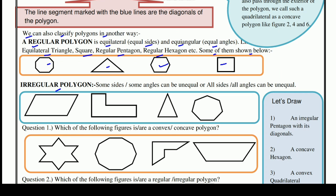Irregular polygon: some sides and some angles can be unequal, or all sides and angles can be unequal. यानि इसकी जो कुछ sides या कुछ angles unequal हो सकते हैं, या फिर सारी sides और angles unequal हो सकते हैं, जैसे कि ये figures हैं। इनकी sides भी unequal हैं और इनके बीच बनने वाले angles भी unequal हैं।